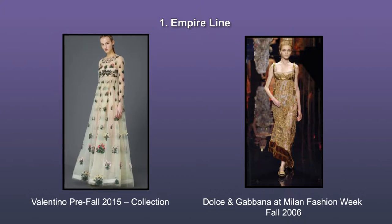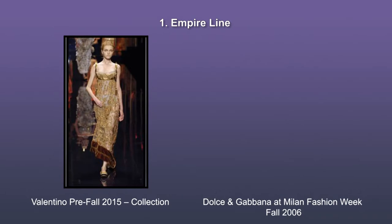The next picture is from Valentino's pre-fall 2015 collection. Note that the entire dress is made out of the same fabric with some surface embroidery and has an empire waistline from which the skirt starts with gathers. On the right is a picture from Dolce & Gabbana at Milan Fashion Week Fall 2006. The empire waistline has been accentuated with contrast fabric continuing to the shoulder straps.